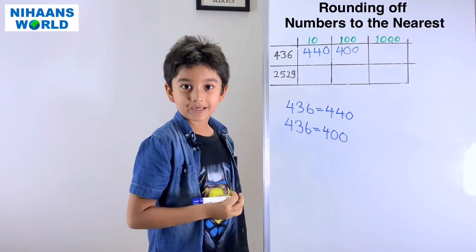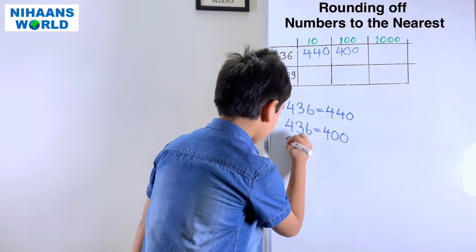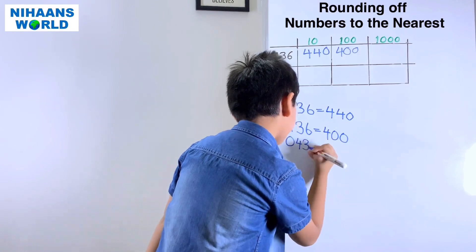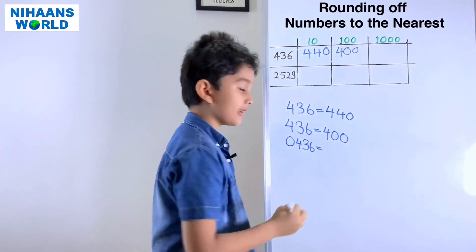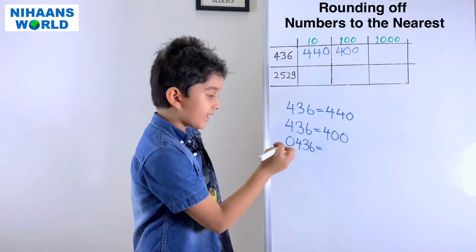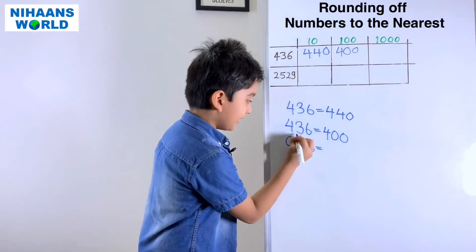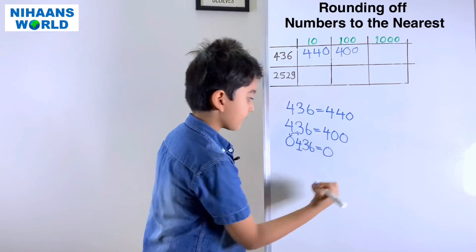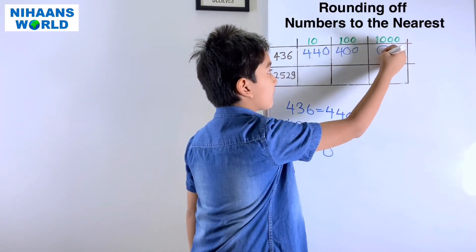For 436 rounded to the nearest thousand: we check the hundreds place — 4 is a weak number, so it cannot give anything. The result is 0.